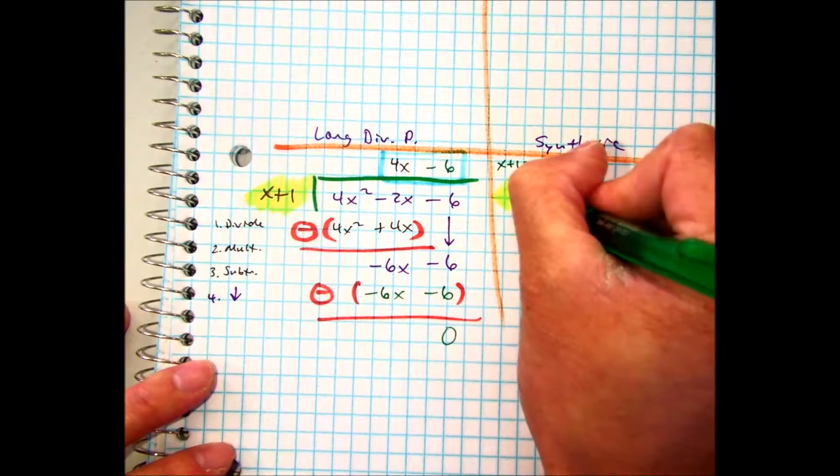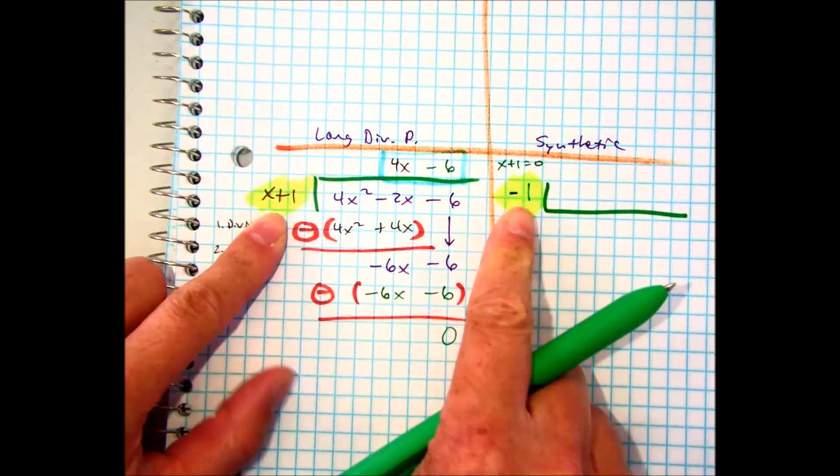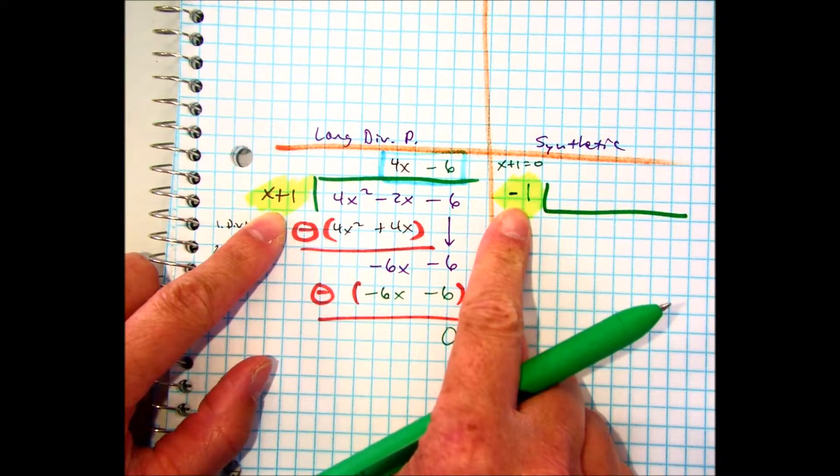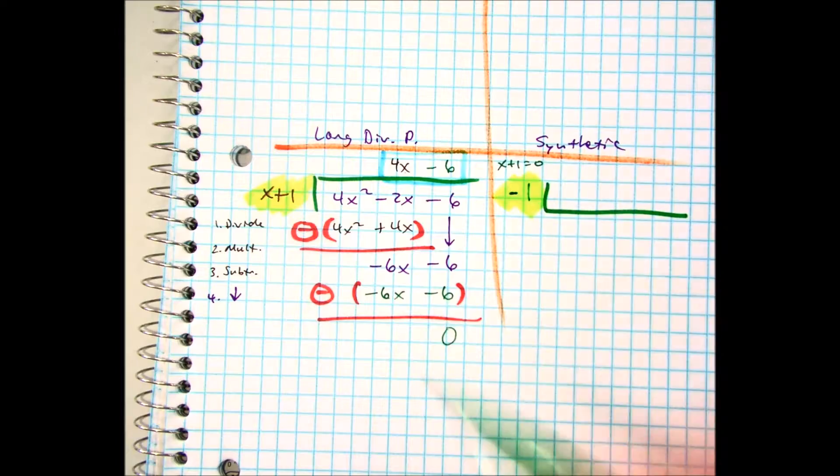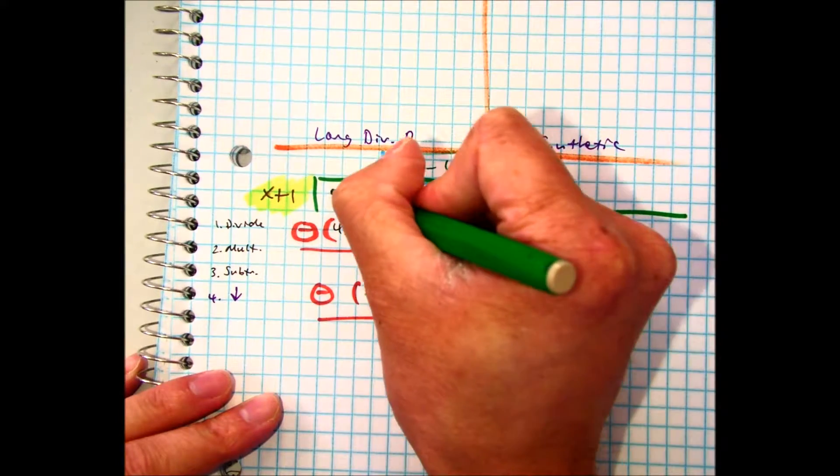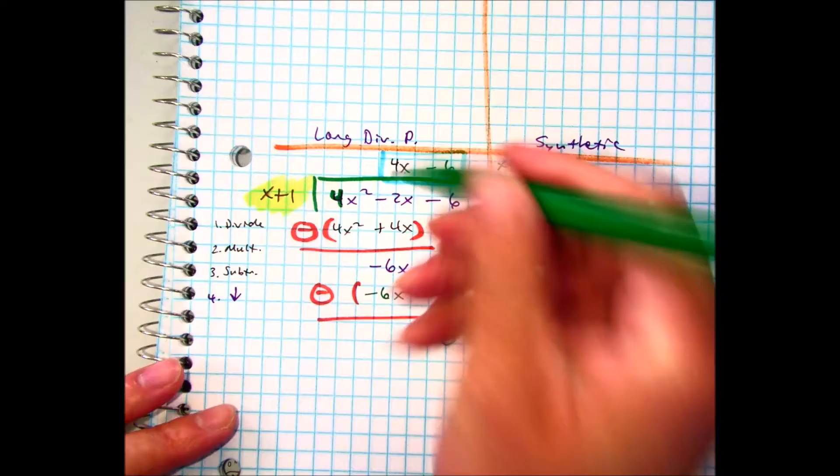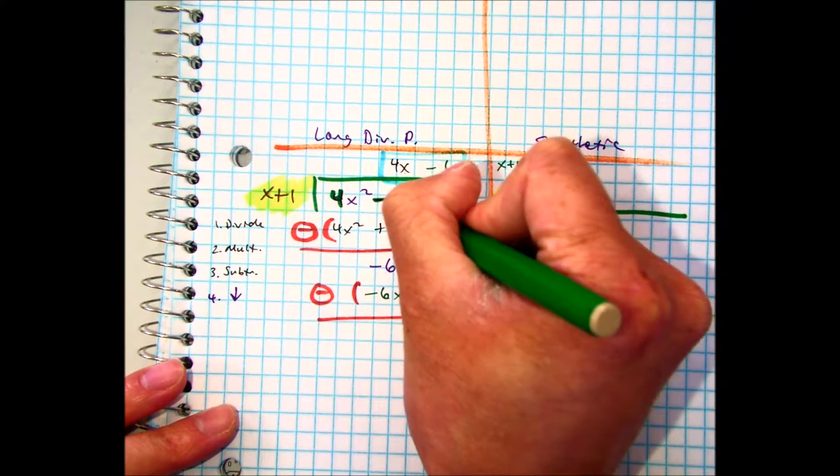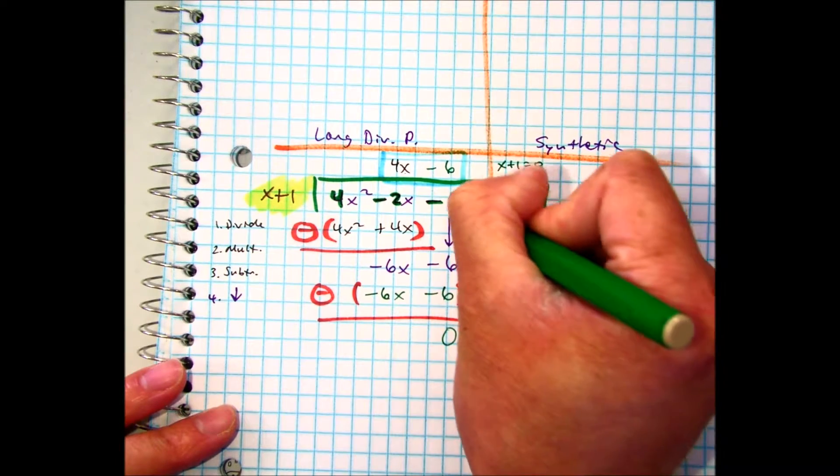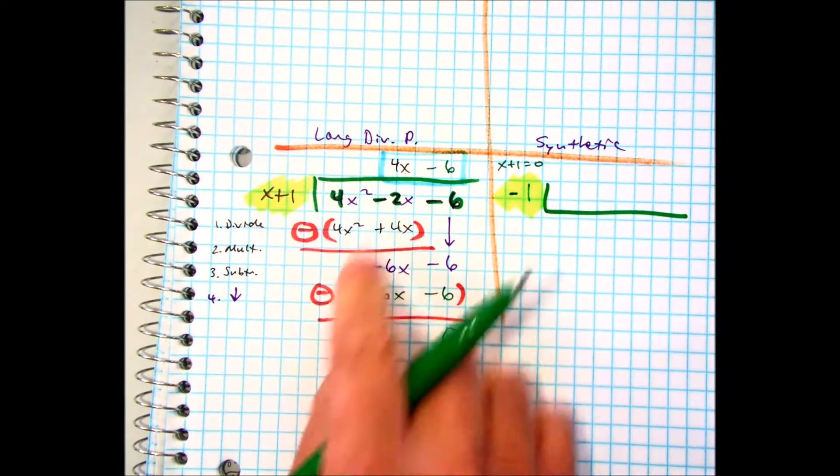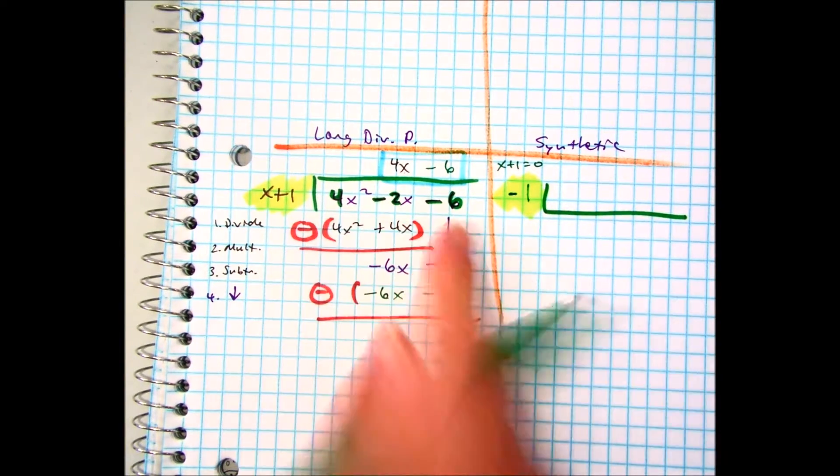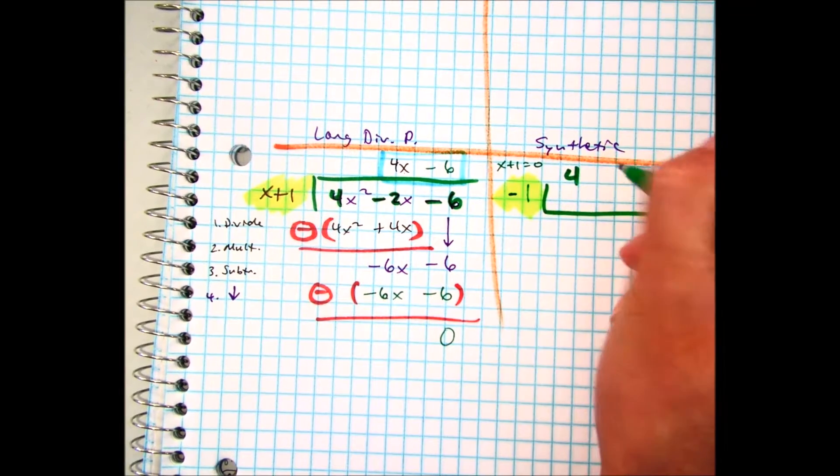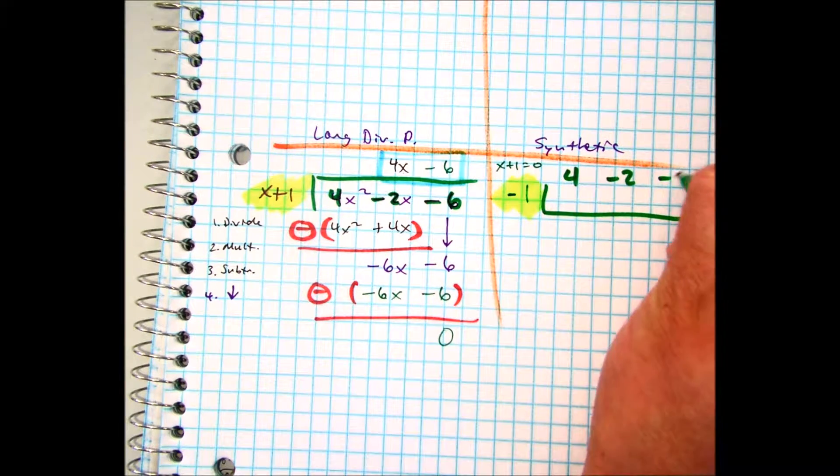Negative 1. So pay attention. I'm not using positive 1, I'm using negative 1. And then I'm going to go ahead and use my coefficients. So I have the coefficients 4, that's not a great marker, I keep doing it, negative 2, and negative 6. Notice how that placeholder, if we need one in the future, is very important. So I have 4, negative 2, and negative 6.